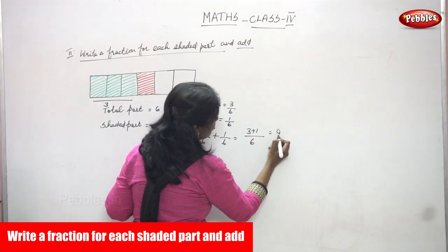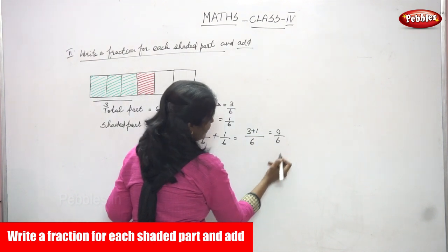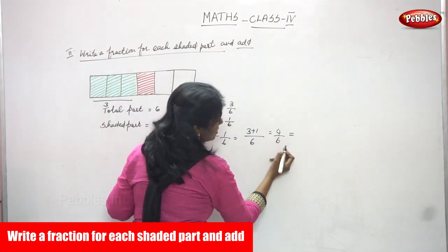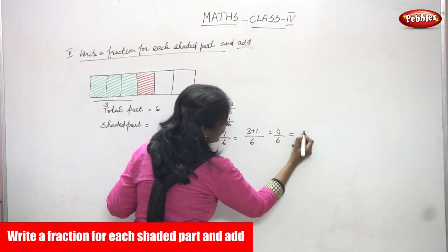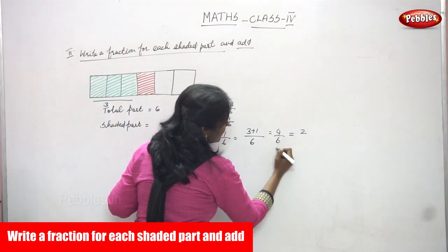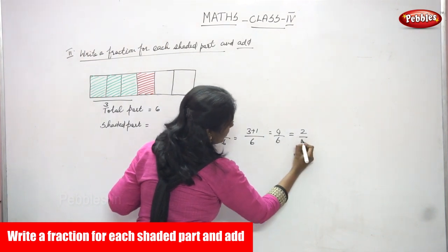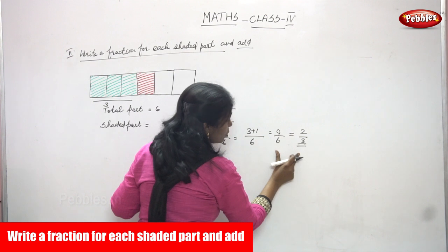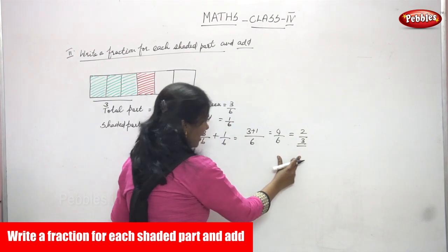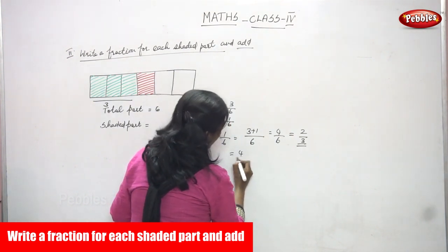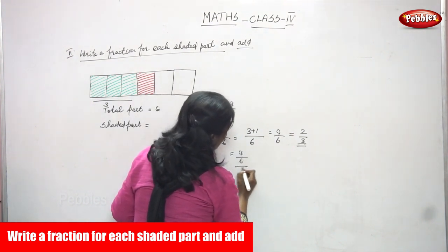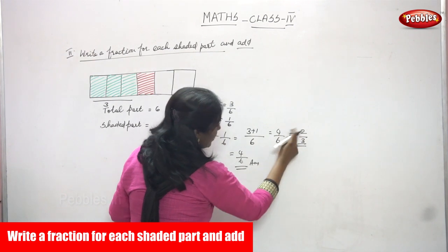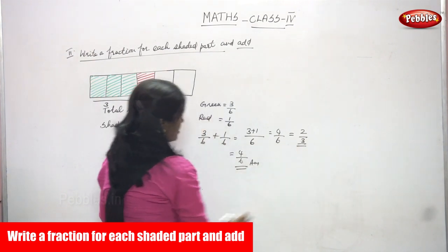Three plus one gives four, so the answer is four by six. If you want to simplify, four divided by two gives two and six divided by two gives three, so the equivalent fraction is two by three. But the exact answer is four by six.